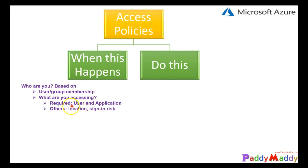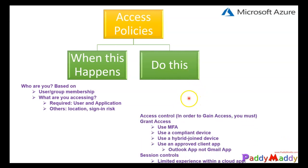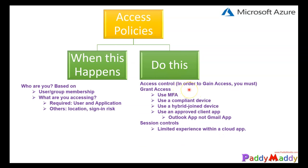Other conditions include locations, risks, operating system, and device type — whether it's bring-your-own or corporate-owned. When these conditions are met or not met, we define what to do. That 'do this' part is considered the access control.